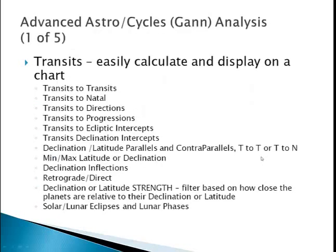Some of the advanced astrocycles features are that it can calculate transits and easily display them on the chart. You can do transits to transits, natal, directions, and progressions. You can have ecliptic intercepts, declination intercepts, and you can also do parallels and contraparallels — either transit to transit or transit to natal — min to max, min/max of latitude or declination, and declination inflections.